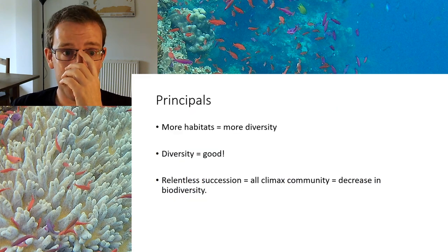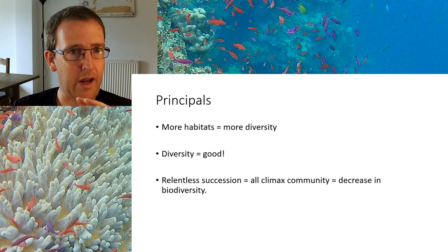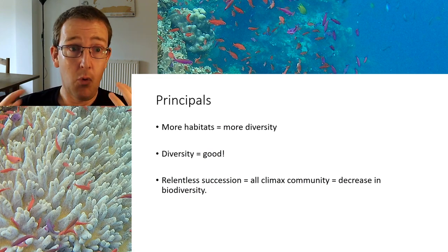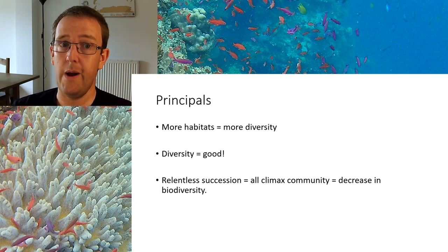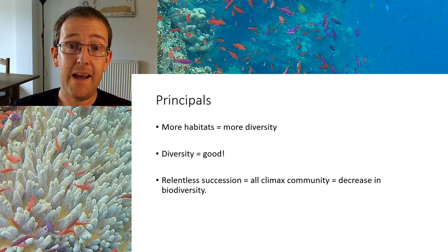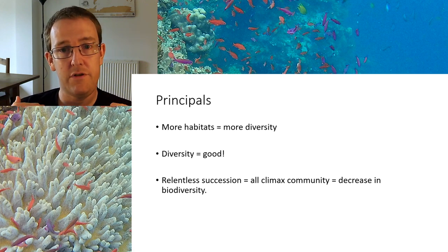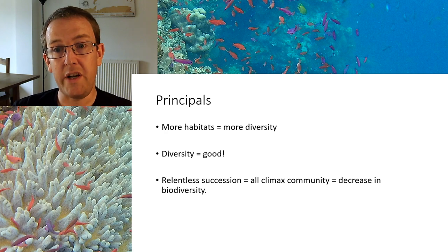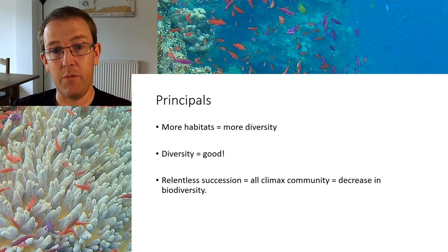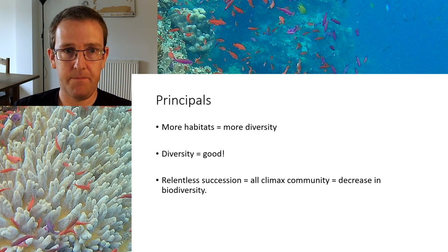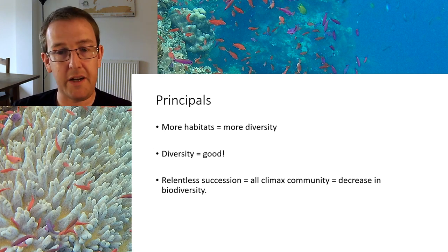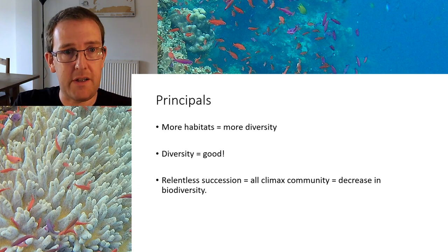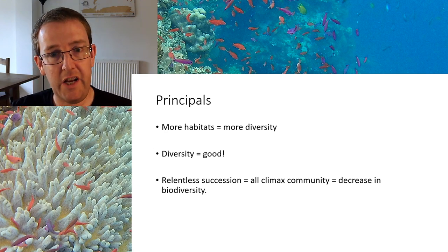Starting with our principles: what we've already established through the AS lessons is that more habitats means more diversity. At AS level, diversity is good for a number of reasons, and you should now be able to calculate diversity using Simpson's Diversity Index. From last lesson, relentless succession — if left unchecked — would lead to a climax community, and if that were to happen, we would actually get a decrease in biodiversity. The syllabus does talk about the dynamism of environments: new land being created, environments moving up to climax, some being damaged and secondary succession kicking in.